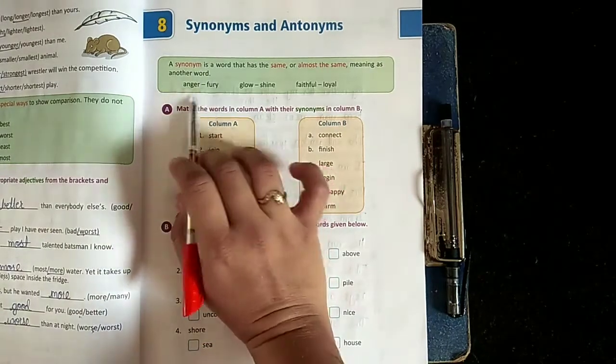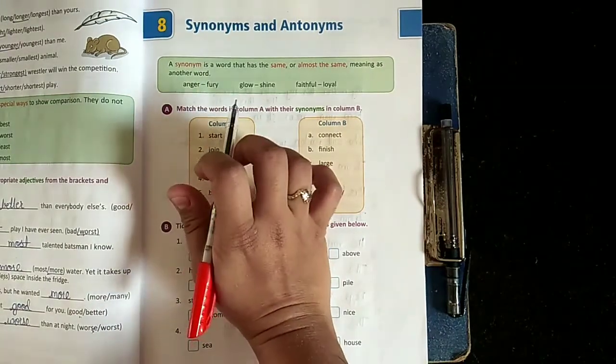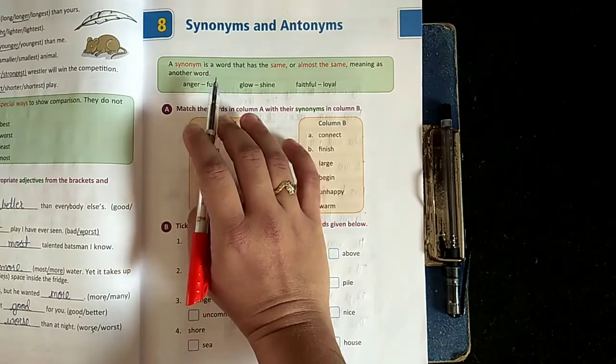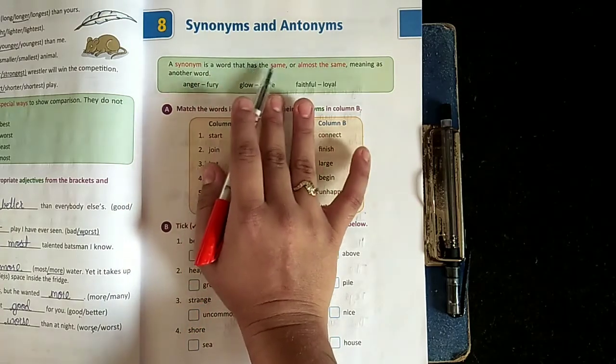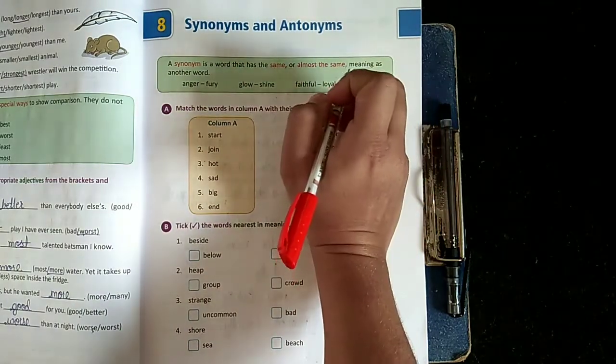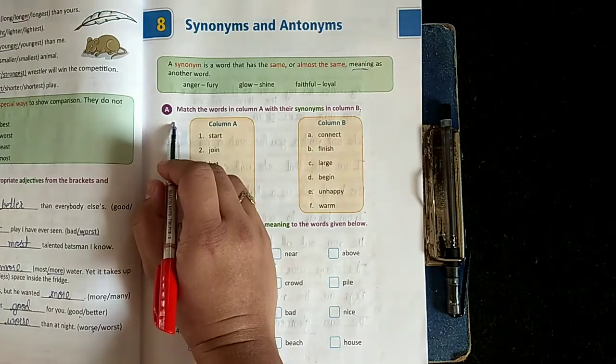The two different words - words ki spelling alag hogi, but their meaning will be the same. Okay, see - words that have same or almost the same meaning, right?